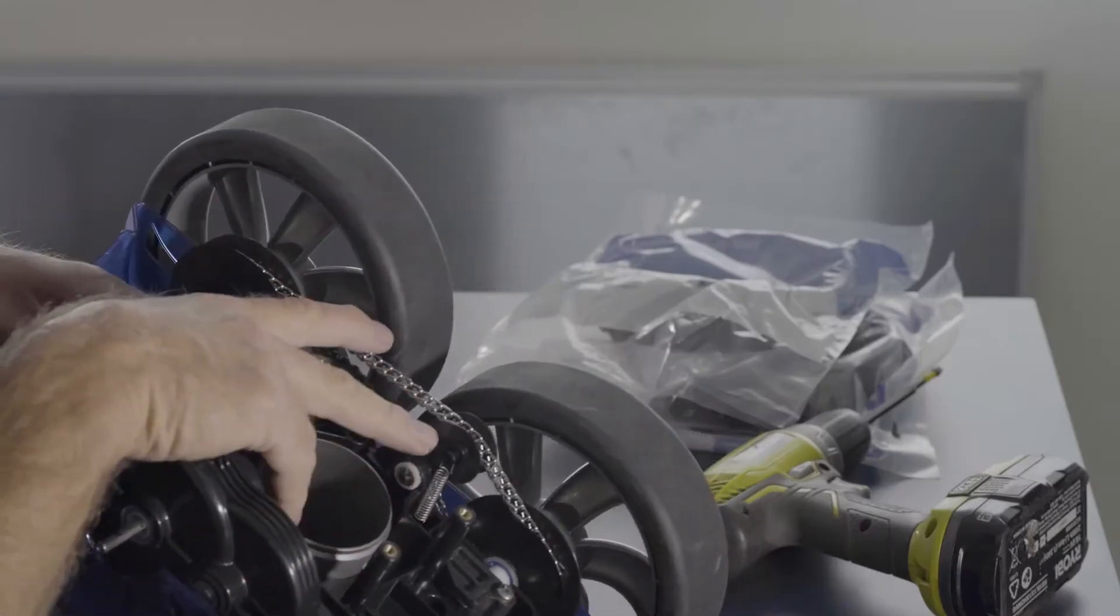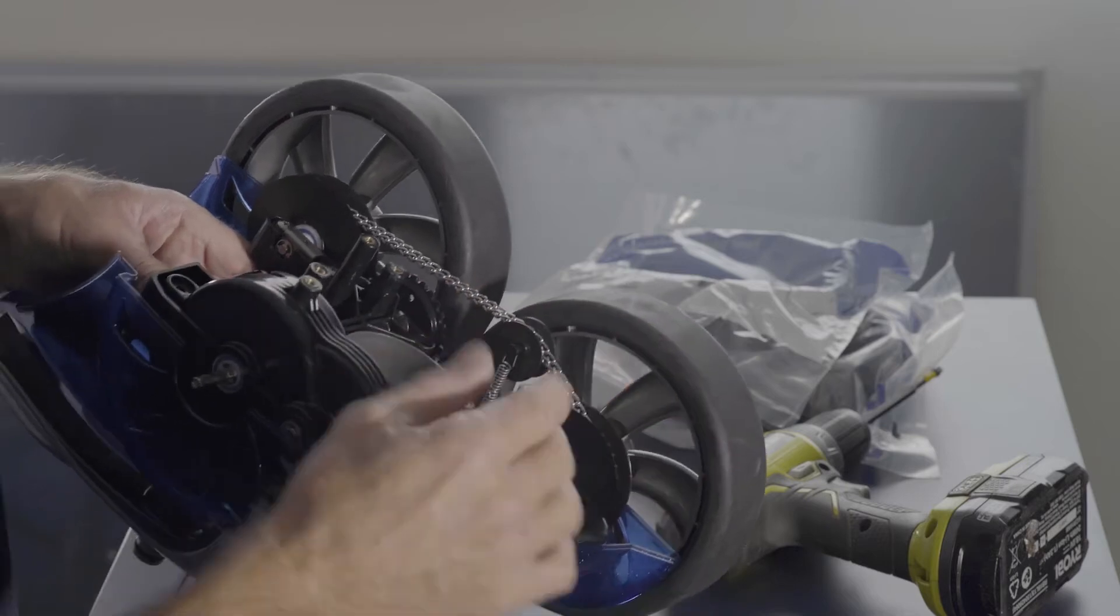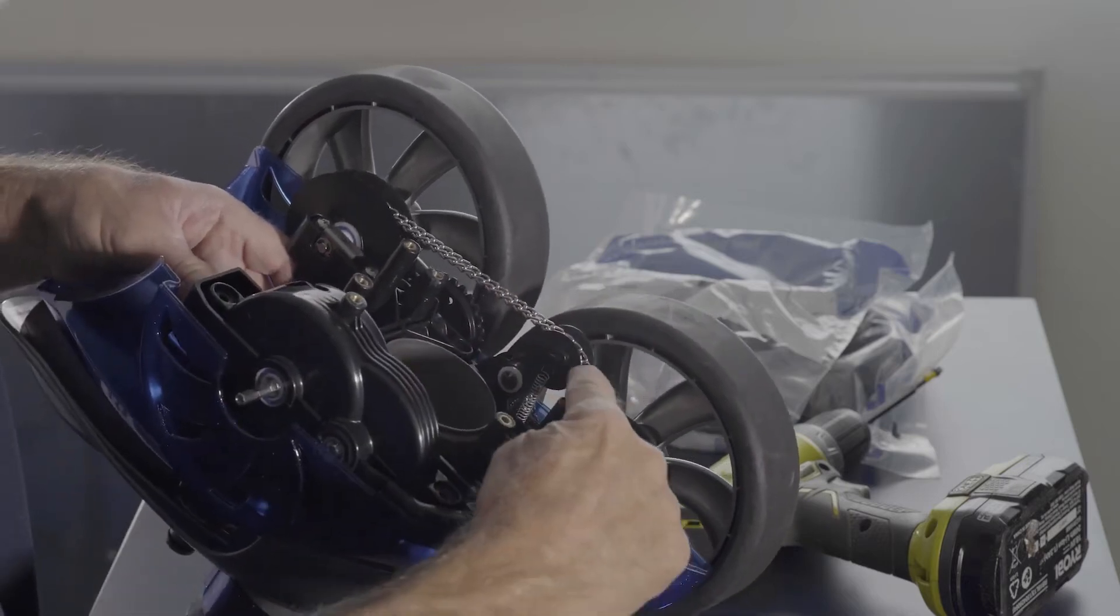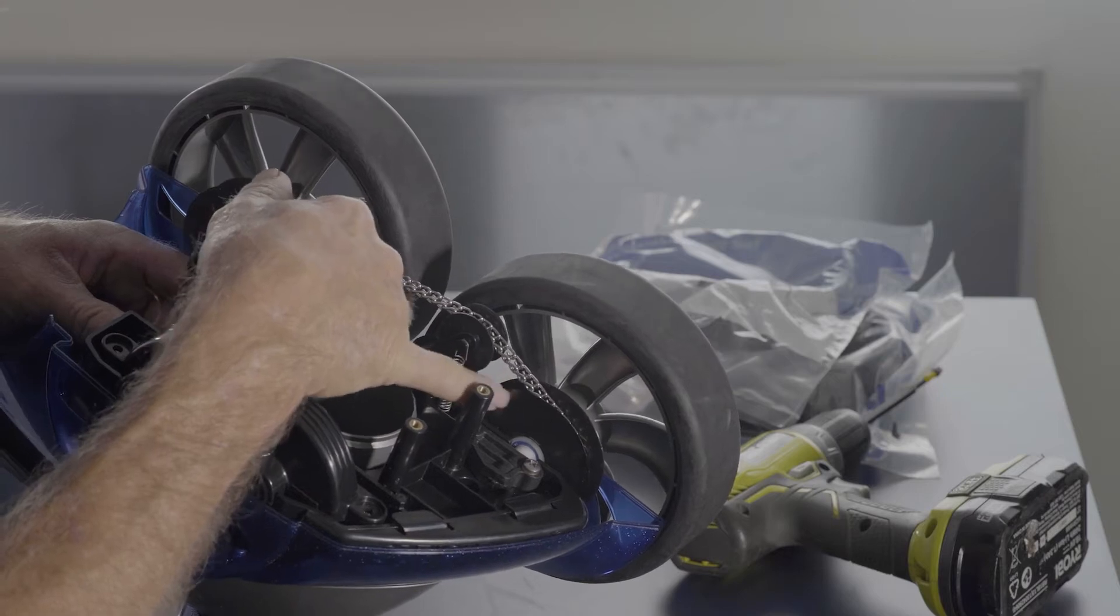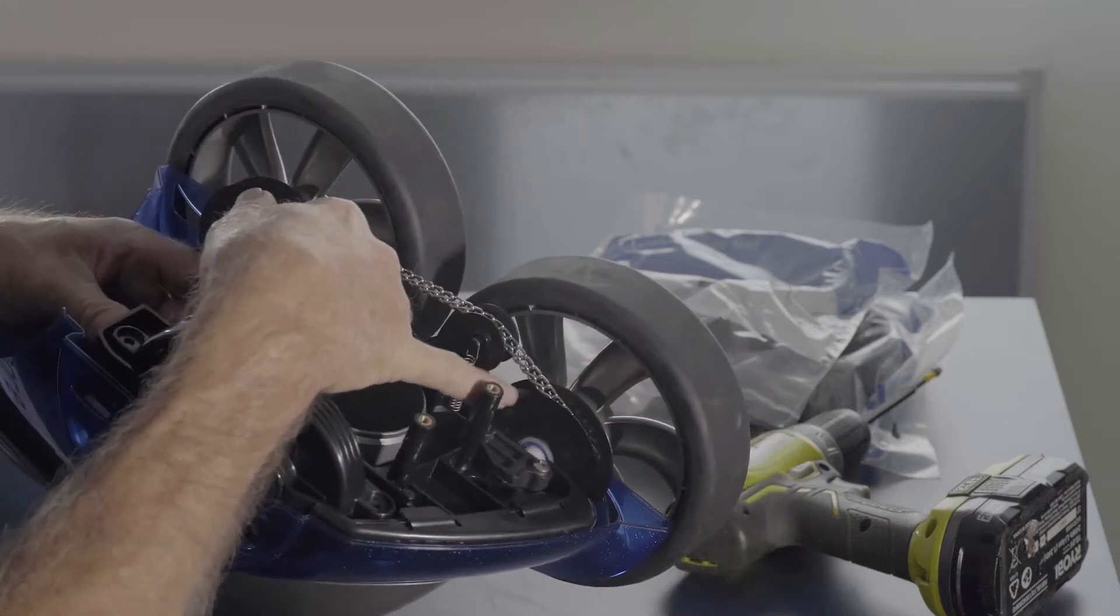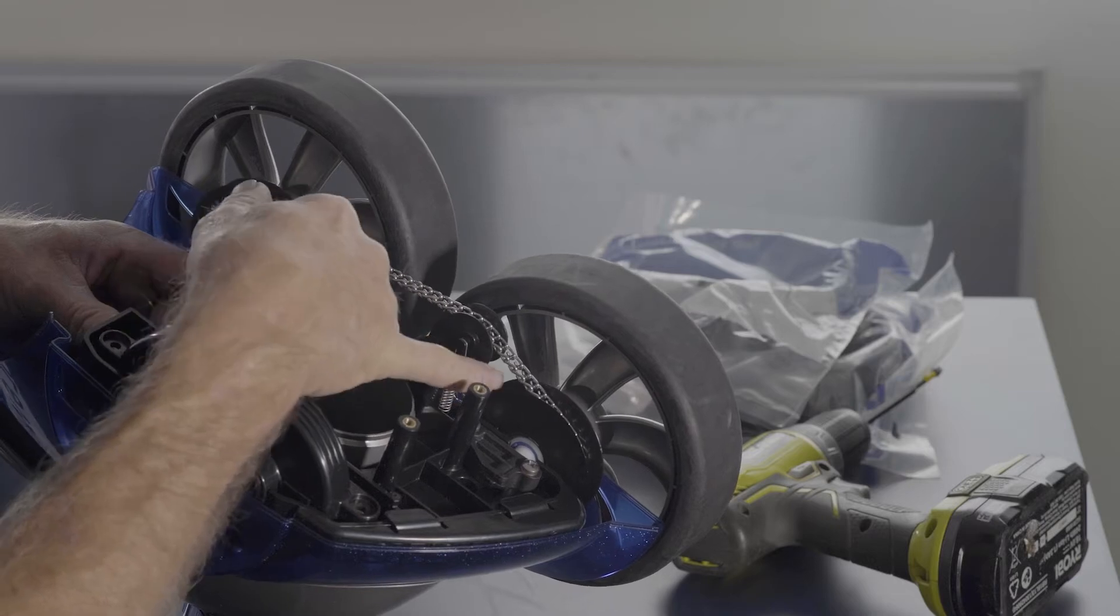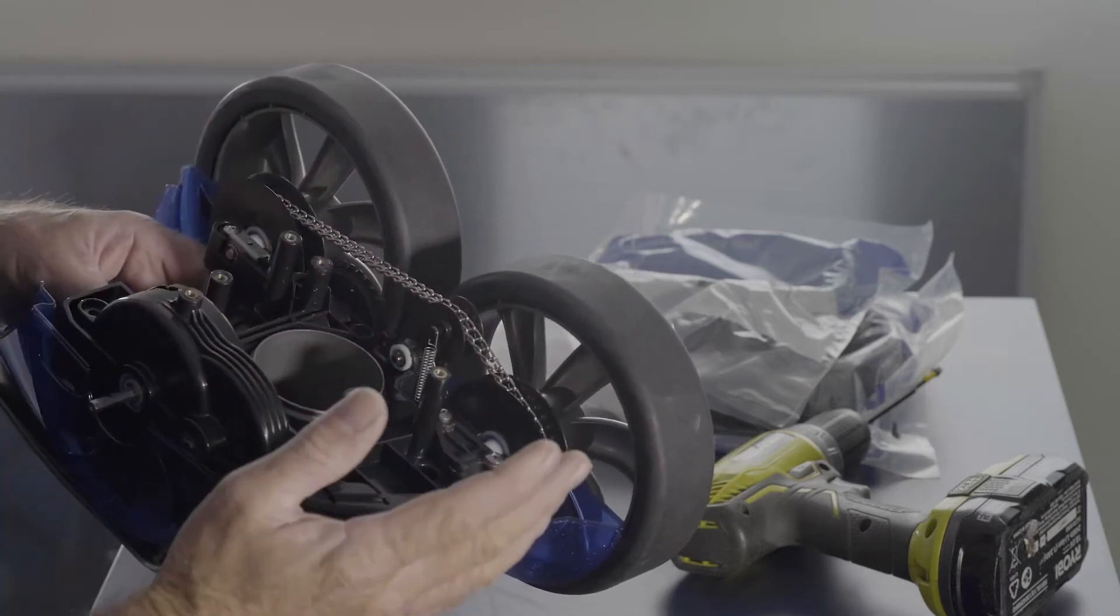What you've got is what they call the chain tensioner, which as it says, keeps tension on the chain. As the chain stretches, this wheel here will start to get closer and closer to the front wheel. And once they start to rub, then that creates friction. And that'll slow the machine down and it'll just lose performance.